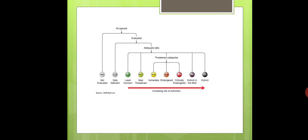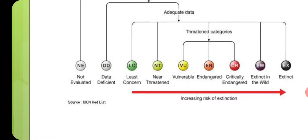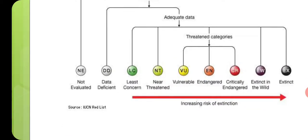The Red List of IUCN is revised and updated every year, and it projects the survival status of many species. Of the nine categories, categories three, four, and five — that is Critically Endangered, Endangered, and Vulnerable — fall under the broad group called Threatened Species.